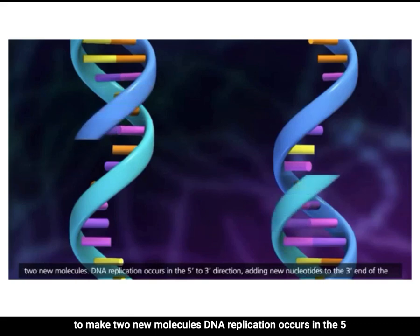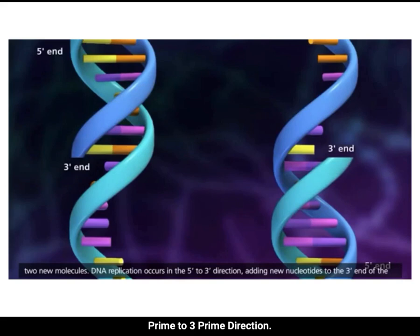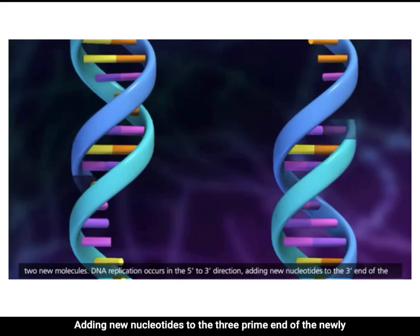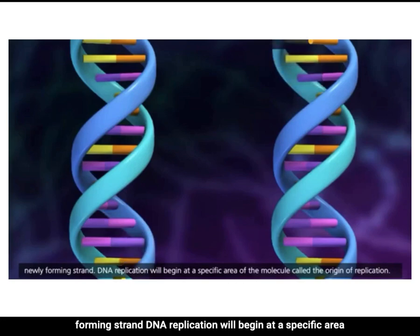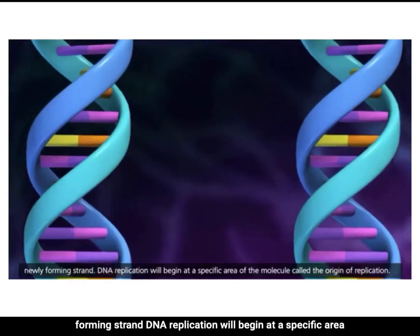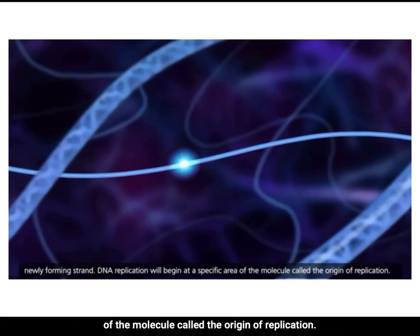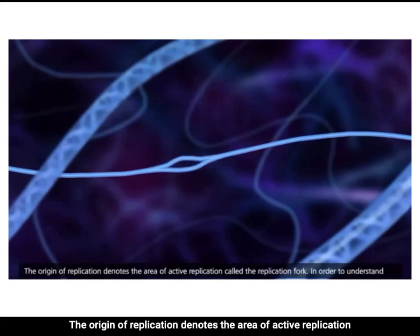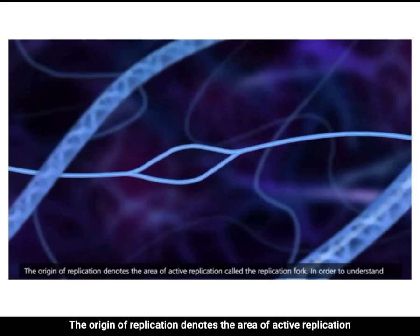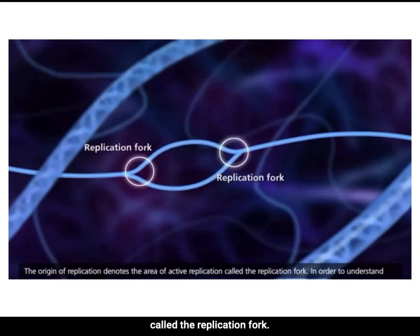DNA replication occurs in the 5' to 3' direction, adding new nucleotides to the 3' end of the newly forming strand. Replication begins at a specific area called the origin of replication, which denotes the area of active replication called the replication fork.